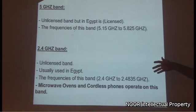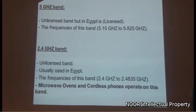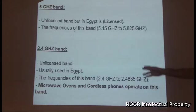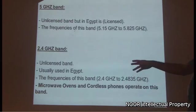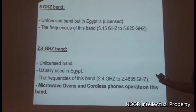The 5 GHz band is a licensed band. In Egypt, it requires a license from police agencies because it is used in military applications, so you need permission to use it. The frequency range of this band is from 5.15 to 5.825 GHz. The 2.4 GHz band is the more common and unlicensed band, with a frequency range from 2.4 to 2.4835 GHz, giving a total bandwidth of 83.5 MHz.